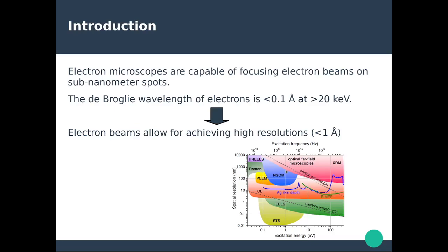We've seen in previous chapters that we can use near-fields and evanescent waves to decrease and improve spatial resolution, going down to tens of nanometers. You can really push the limit of imaging resolution just by going from far-field into near-field. With electron beams, you can go much lower — using cathodoluminescence and EELS to achieve sub-nanometer or at least a few nanometers of resolution.